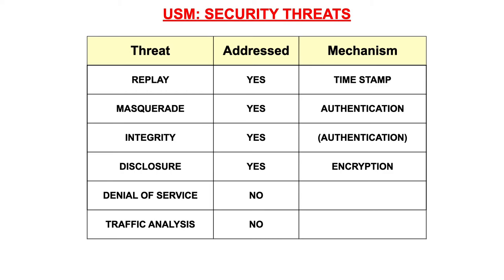The SNMP v3 RFCs identify six threats, of which four are being handled and two are not. There is protection against replay attacks, and timestamps are used to provide such protection. Masquerade attacks — attacks in which an attacker pretends to be a legitimate manager — are protected via authentication mechanisms such as MD5 and HMAC-SHA. If such mechanisms are used, changes in the message via a man-in-the-middle attack will be detected as well, so integrity protection is provided.